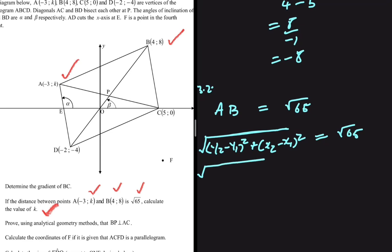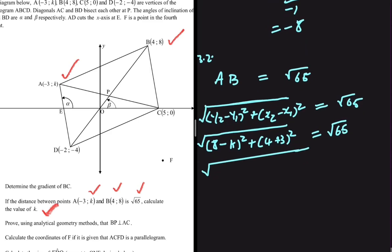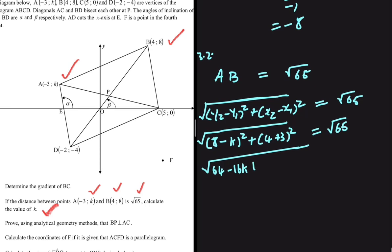Taking B as our second coordinate, y2 is 8 and y1 is k. We square that, plus x2 which is 4, minus x1 which is minus 3 — so 4 plus 3. Squaring that equals the square root of 65. Expanding (8 minus k) squared gives 64 minus 16k plus k squared, and 7 squared gives plus 49, all equal to the square root of 65.